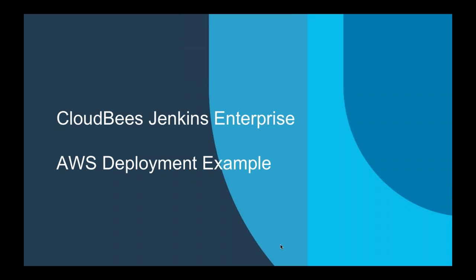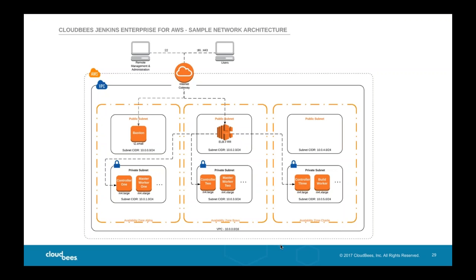The last slide before having a quick look at the product is a sample deployment on AWS with three availability zones. We spread the controllers, the master workers, and the build workers across those zones. Although not a common occurrence, it's not unheard of for Amazon to have a zone outage, and this suggested infrastructure would enable the CJE cluster to survive that outage.